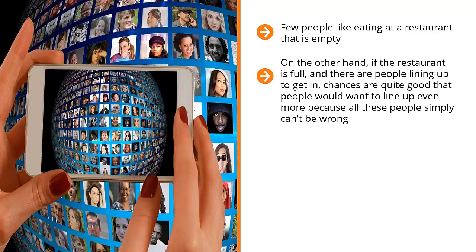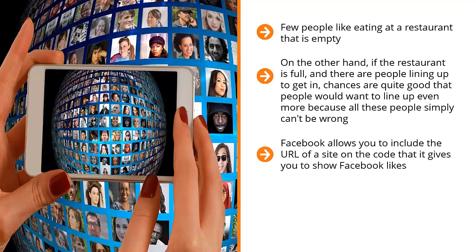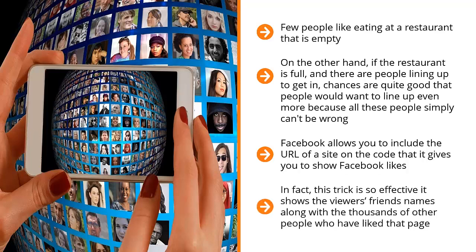By adding the developer code of the biggest brand in your niche to your squeeze page, Facebook allows you to include the URL of a site on the code it gives you to show Facebook likes. Embed that code onto your squeeze page to give the impression that a lot of people already like your squeeze page. This trick is so effective that it shows the viewer's friends' names along with the thousands of other people who have liked that page. Piggyback on this social pool and give the viewer the push he or she needs to sign up to your list.